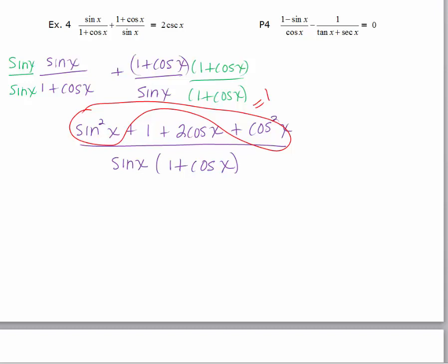When I add that to the one that's already there, I get 2 plus 2 cosine x over sine x times 1 plus cosine x.